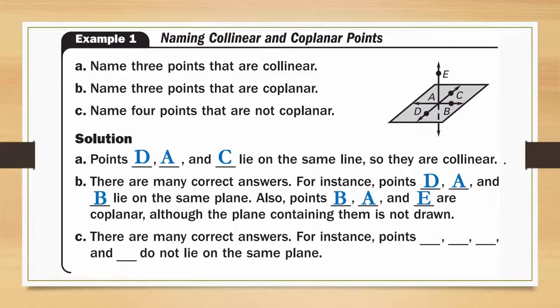C, name four points that are not coplanar. There are many correct answers. For instance, points A, B, C, and E do not lie on the same plane.